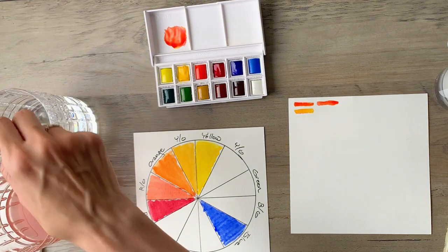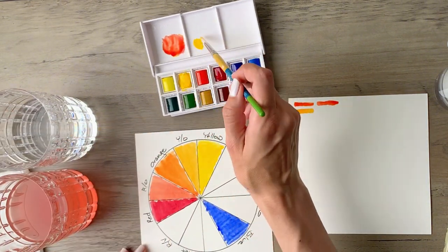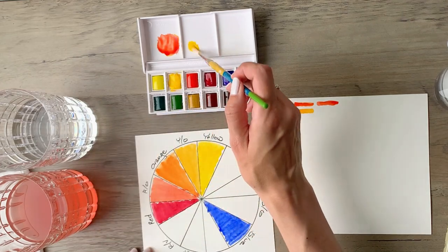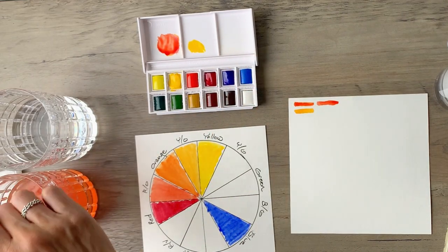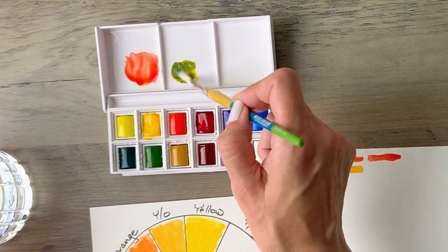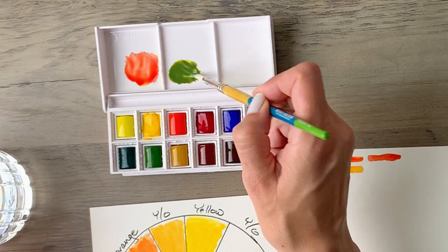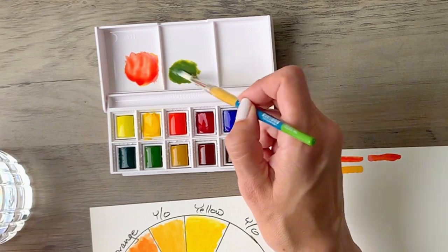Next up you'll be creating green. So you'll mix yellow and blue together. You'll grab roughly equal amounts of both. They're both equally pigmented and you'll mix those two together. Make sure that they're mixed pretty evenly and then you're going to take that and place them between the yellow and the blue on your color wheel.